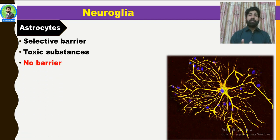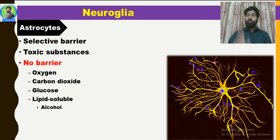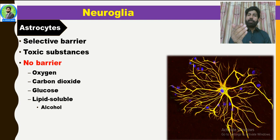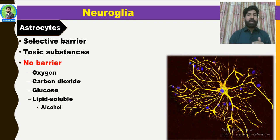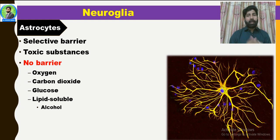Which substances will the barrier not block? Those substances which are critical for the function of the brain. For oxygen — the brain cannot withstand anoxia. Carbon dioxide, if produced in greater concentration, will also be removed. It will not face a barrier. Glucose as well — neurons basically require glucose, so it has no barrier for transportation, because it is a basic requirement for energy production of the neurons. That is why glucose directly reaches the CNS.